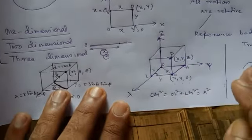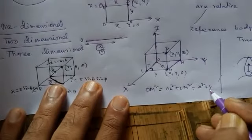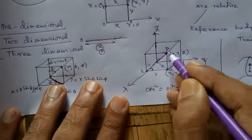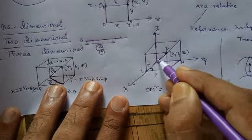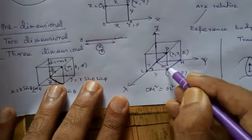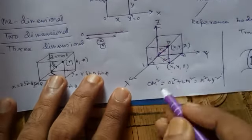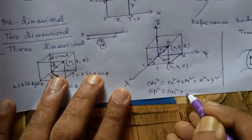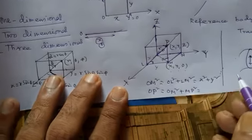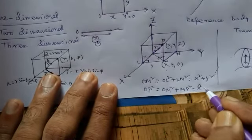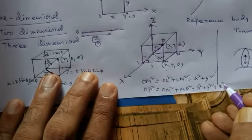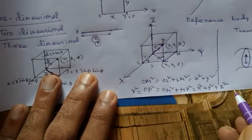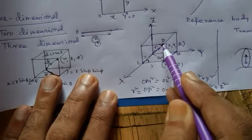In this case, xy is 90 degrees. If OL equals 2, what is OL squared? OM squared equals x squared plus y squared. MP equals z, so MP squared equals z squared. Therefore OP squared equals x squared plus y squared plus z squared, giving us r squared equals x squared plus y squared plus z squared. This is the distance formula in 3D.